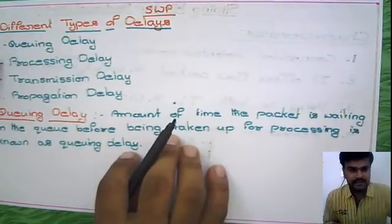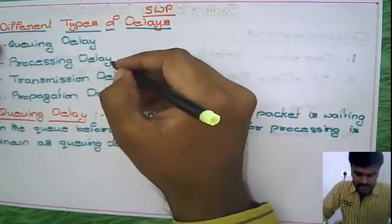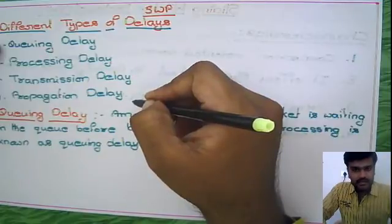Before going into Stop-and-Wait, Go-Back-N, and Selective Repeat protocols, we need to know some definitions so that every concept will be clear. These are terminologies we are going to use throughout the entire networking course. Here we have four kinds of delays in computer networks: queuing delay, processing delay, transmission delay, and propagation delay — all altogether different kinds of delays which occur in a computer network.